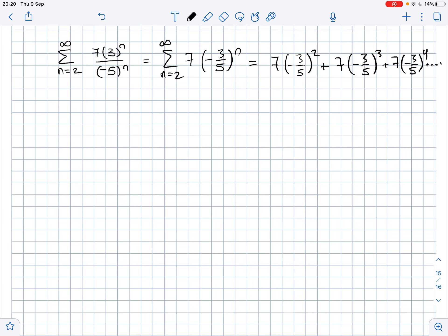If you look at these terms, you will see that the common ratio here is negative 3 over 5, because every next term equals the previous term multiplied by negative 3 over 5.